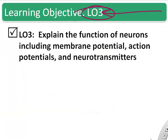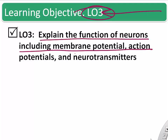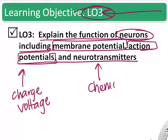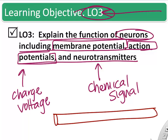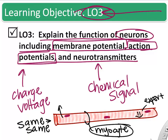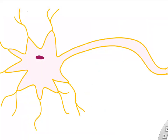The next learning objective is to explain the function of neurons, including membrane voltage, action potentials, and neurotransmitters. Just as with skeletal muscle, potassium leaving the cell and sodium entering the cell changes the membrane voltage. We also learned about acetylcholine as a neurotransmitter that triggers action potentials in muscle — neurons work very similarly.